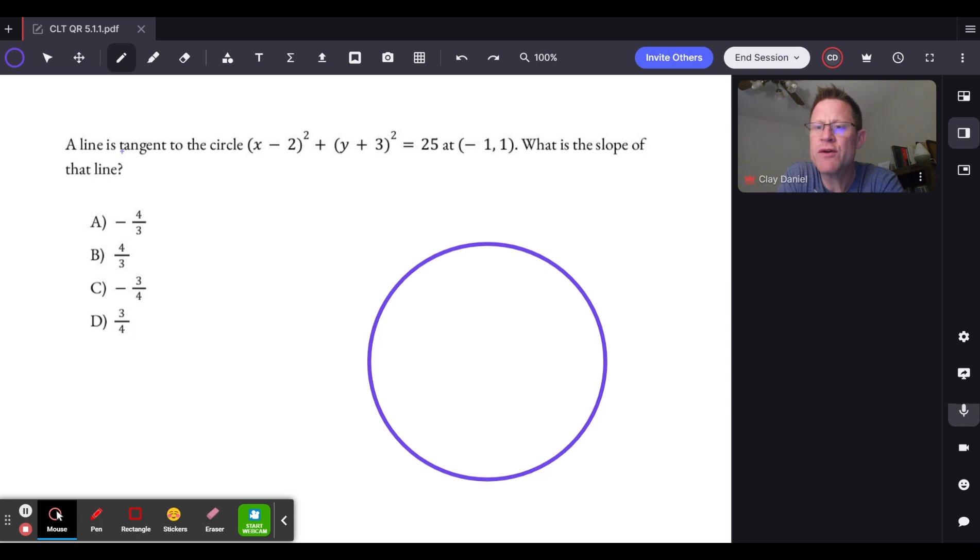So you might write down on your scratch paper the word tangent. That's our first clue. We then have the circle equation that's going to reveal some things to us. We'll come back and look at that. We have the tangent point and we're asked about the slope.